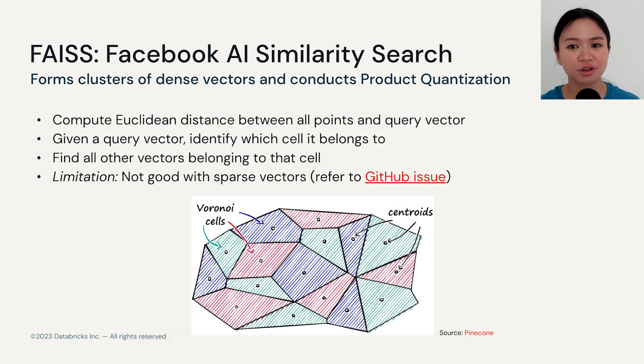To optimize the search process, FAISS makes use of something called Voronoi cells. Instead of computing the distance between every single vector that you have in the storage and the query vector, FAISS actually computes the distance between the query vector and the centroid first. Once it identifies the closest centroid to the query vector, you will find all the other vectors similar to that query vector that exist in the same Voronoi cells.